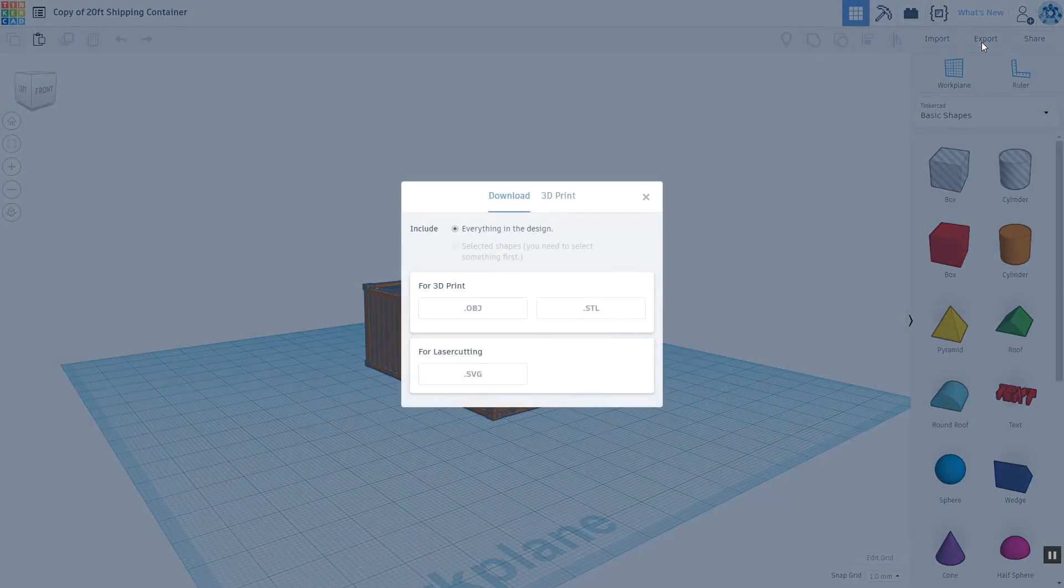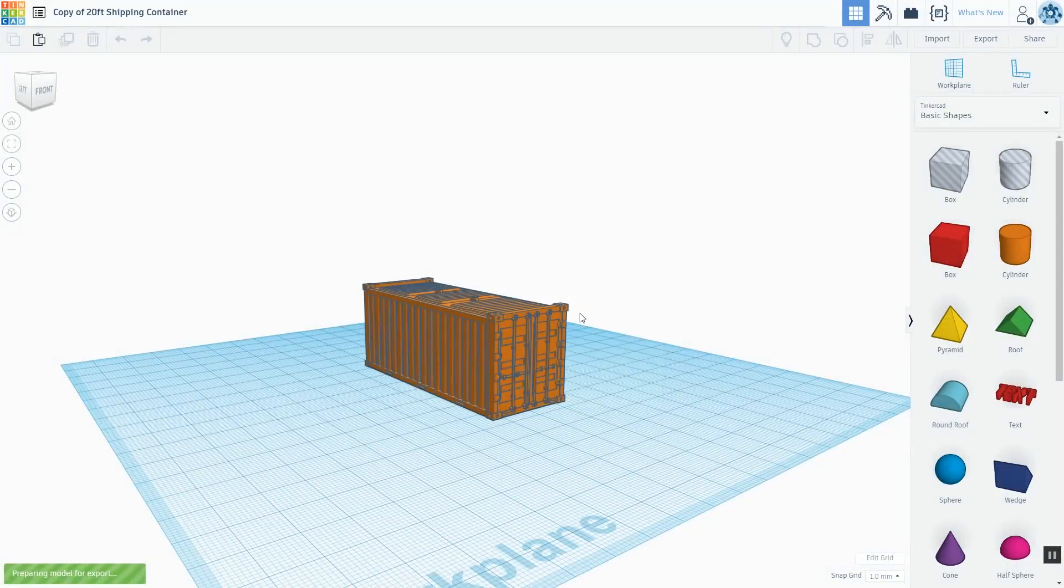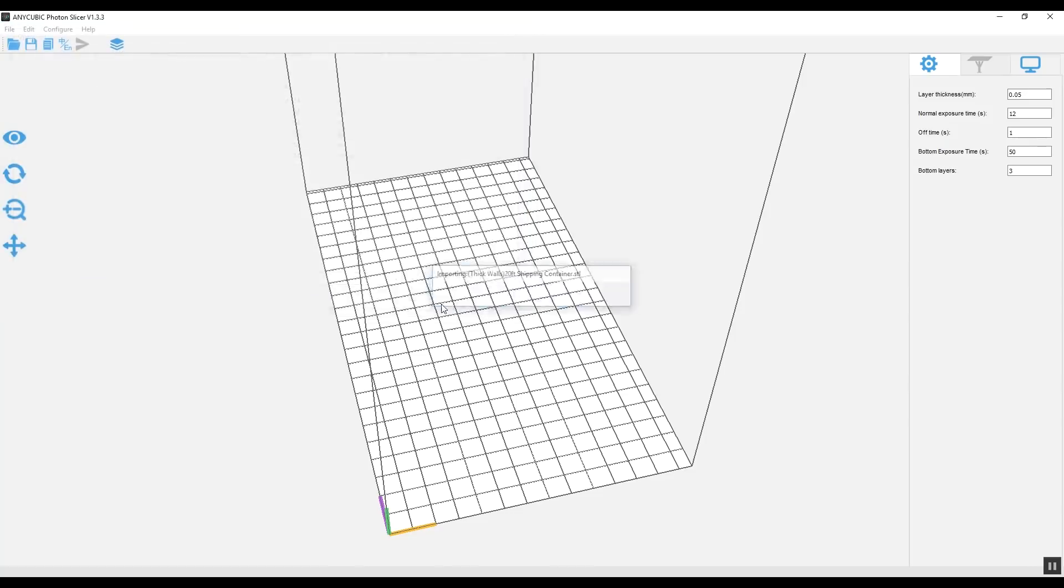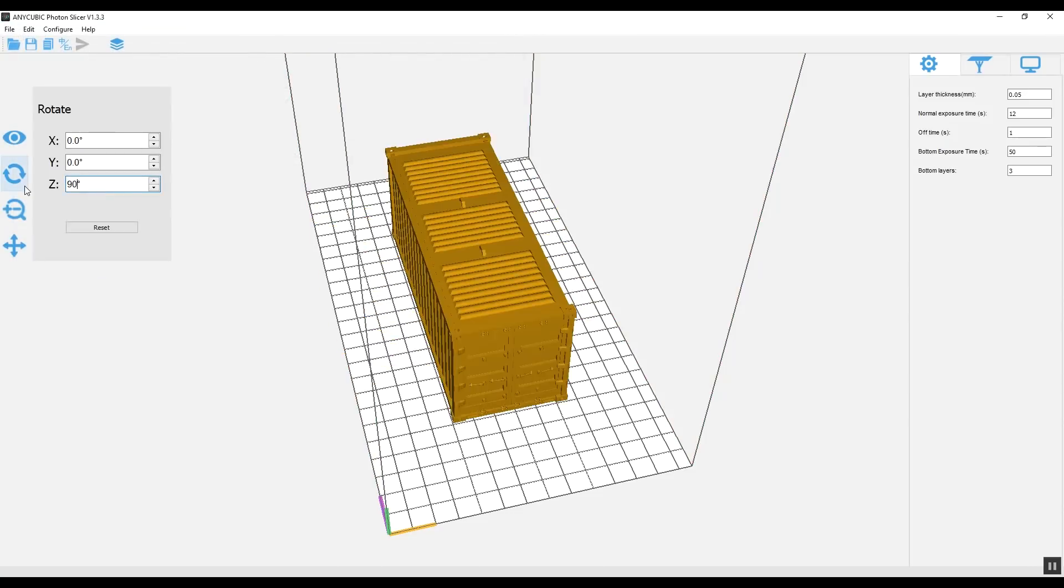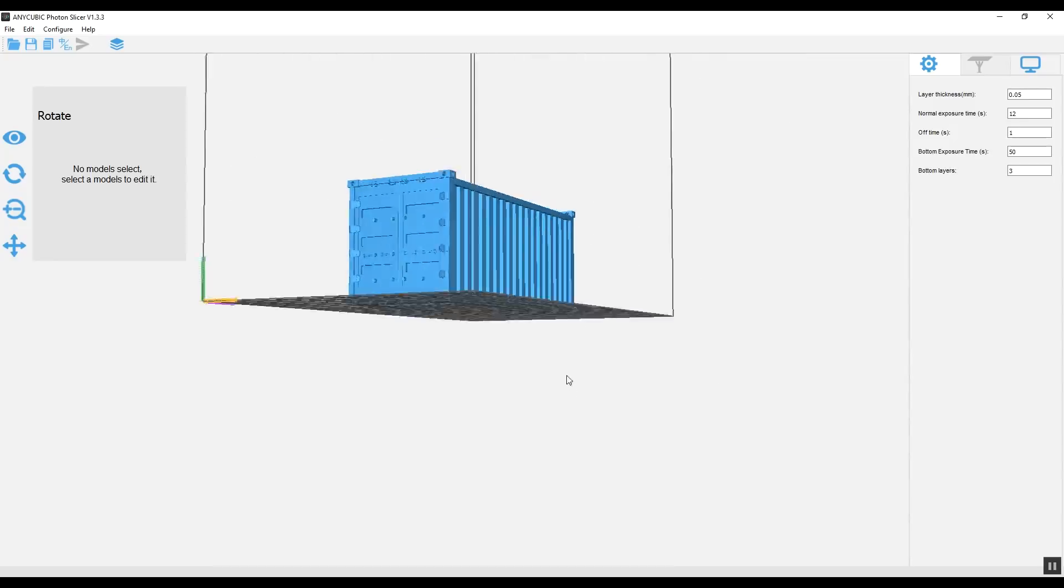With your model ready to print simply download the STL file and import that into the Anycubic slicing program that comes with the printer. This program helps finalize and prepare the model for printing.